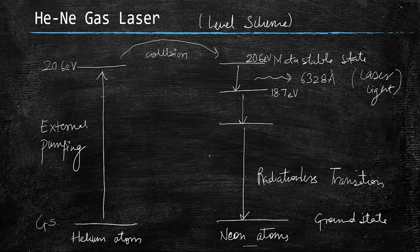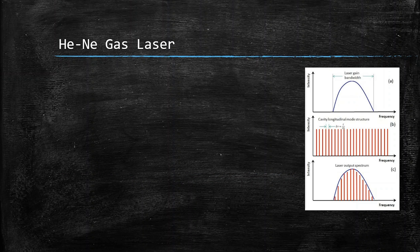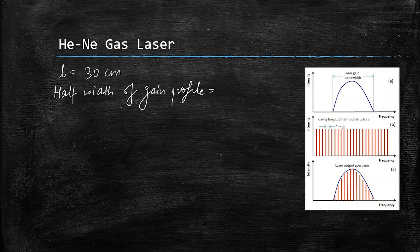Now for the numerical part: we need to find the number of longitudinal modes that can be excited. We are given a cavity length L = 30 cm, a half-width of the gain profile Δλ = 2 × 10⁻³ nm, and the emission wavelength λ = 6328 Å.